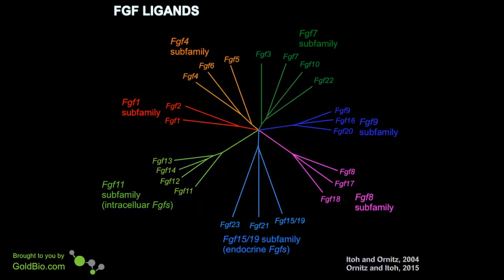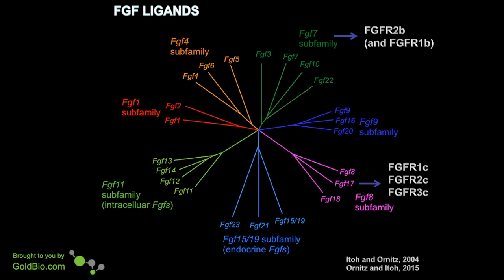If we look at the specificity of different FGFs for different FGF receptors, we see that the FGF7 family — which consists of FGF3, 7, 10, and 22 — can very potently and specifically activate the B splice form of FGF receptor 2, and to some extent the B splice form of FGF receptor 1. In contrast, the FGF8 family — which consists of FGF8, 17, and 18 — only activates the C splice forms of FGF receptors 1, 2, and 3. The FGF9 family activates C splice forms of FGF receptors 1, 2, and 3, but also has the unique ability to activate FGF receptor 3B.